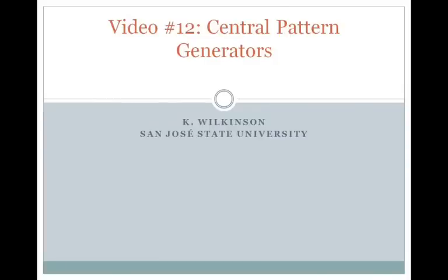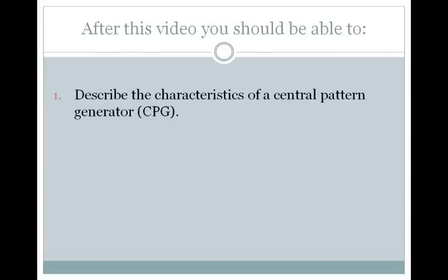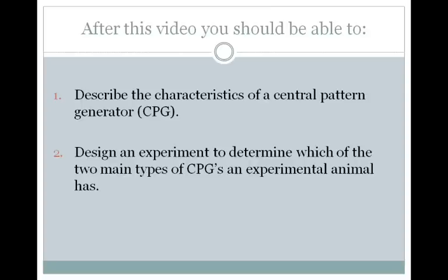Today's video is on central pattern generators, or CPGs. After watching this video, you should be able to do the following. First, you should be able to describe the characteristics of a central pattern generator, or CPG. And second, you should be able to design an experiment to determine which of the two main types of CPGs an experimental animal has.